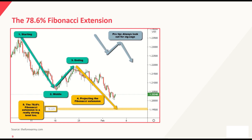As mentioned earlier, there's the 78.60 Fibonacci extension which was very key. Looking at this example, there is a clear market structure — we zoom out a bit. Starting from a point where price goes down, bounces back up, and comes down again — this is what we like to look out for. This is otherwise known as a zigzag. Markets generally do quite a bit of zigzagging.